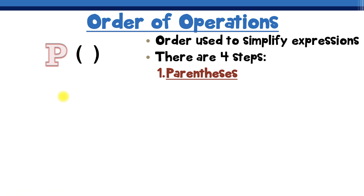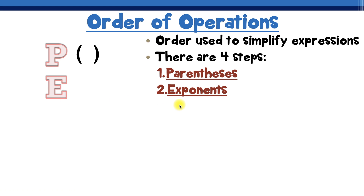For step number two we go to the letter E, and E stands for exponents. We need to evaluate any exponents that show up in our expression. This number here is called the base, and the exponent tells you how many times you multiply the base by itself.